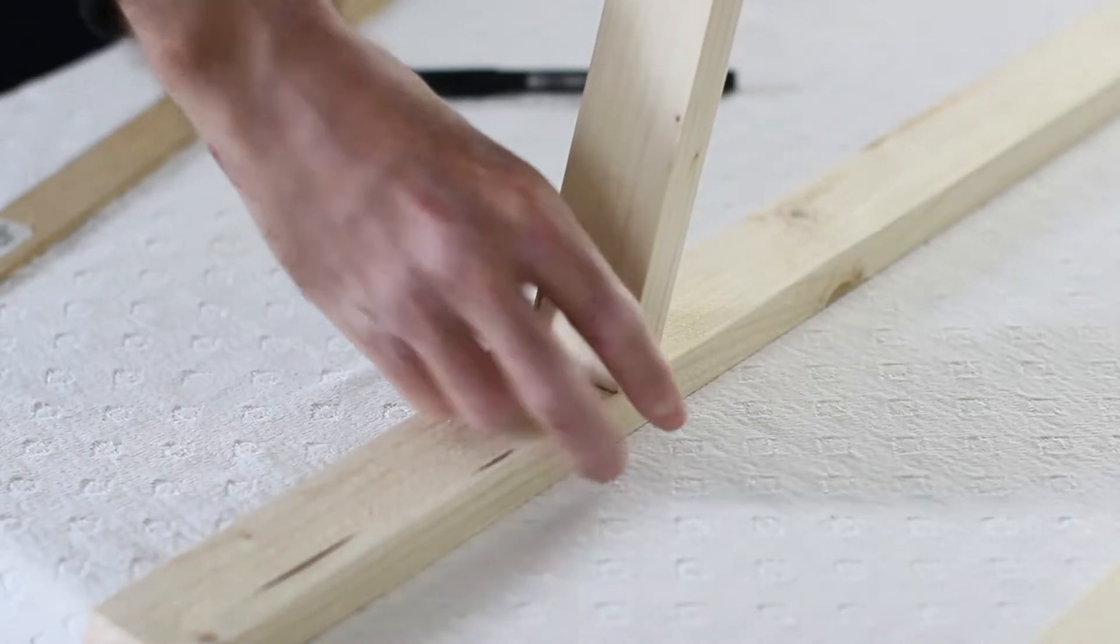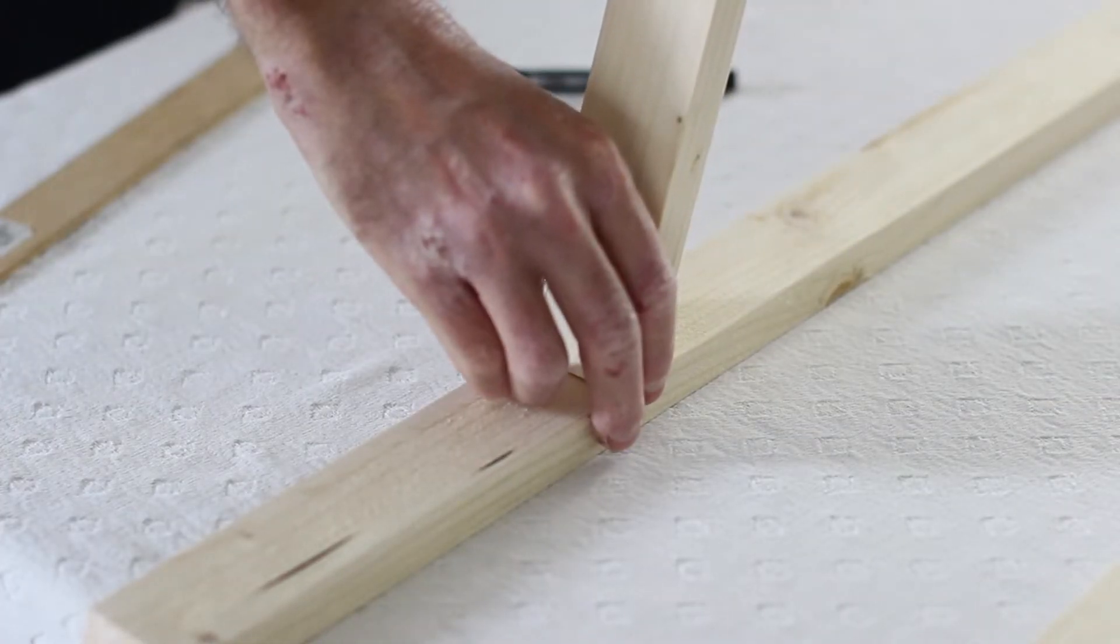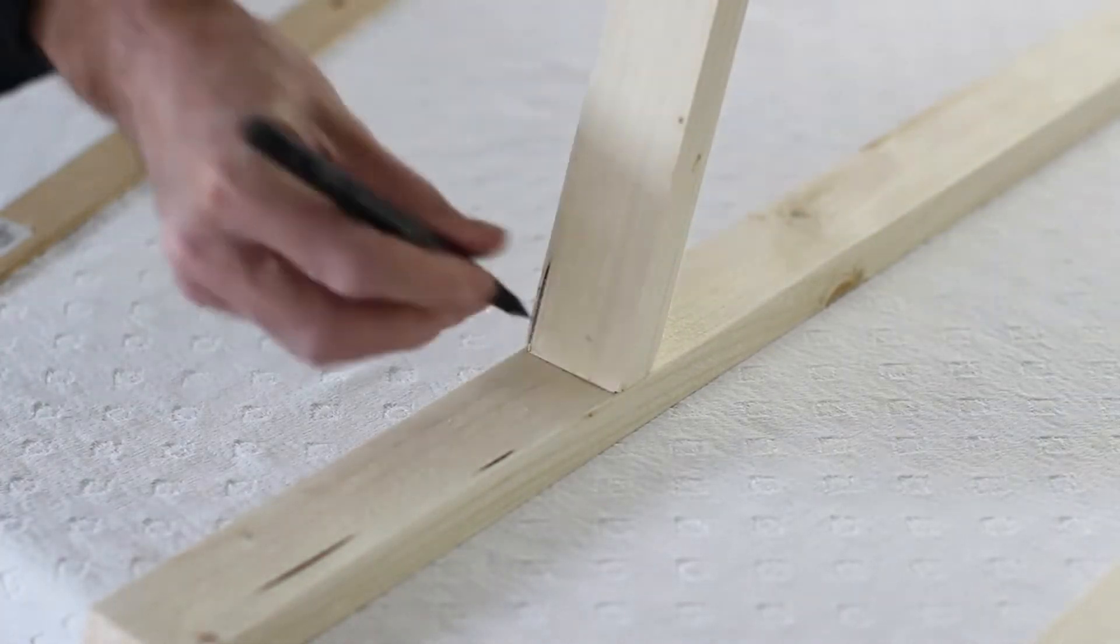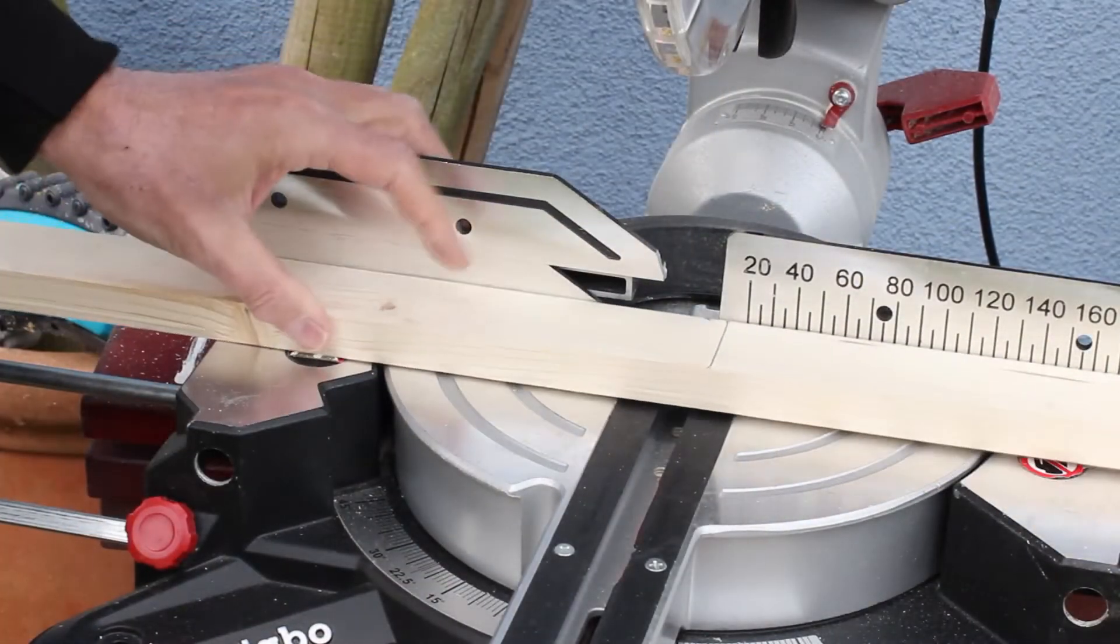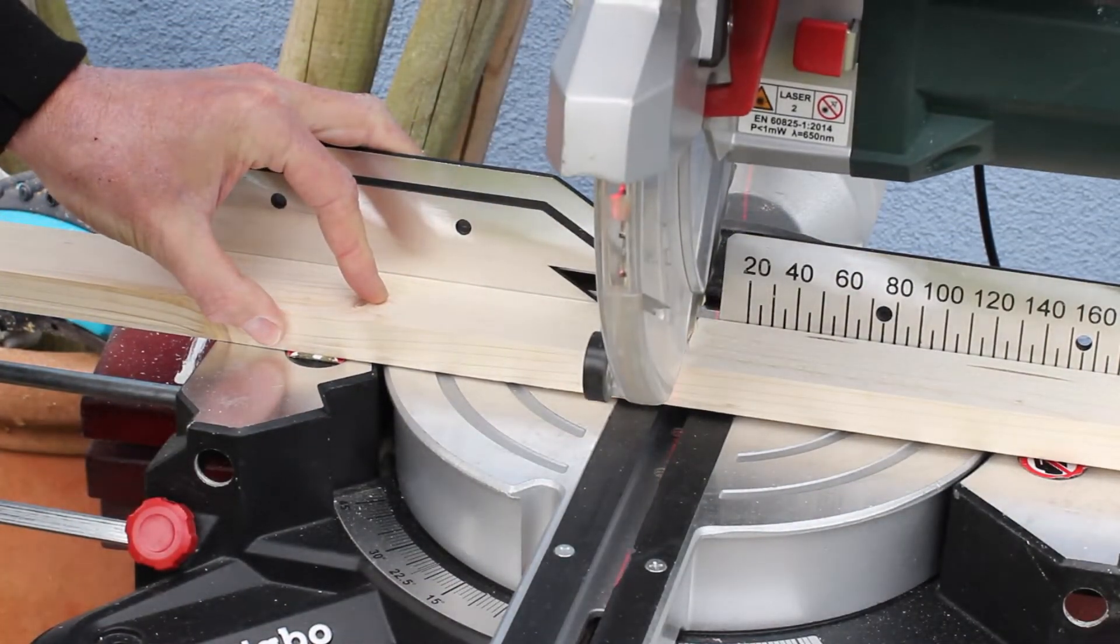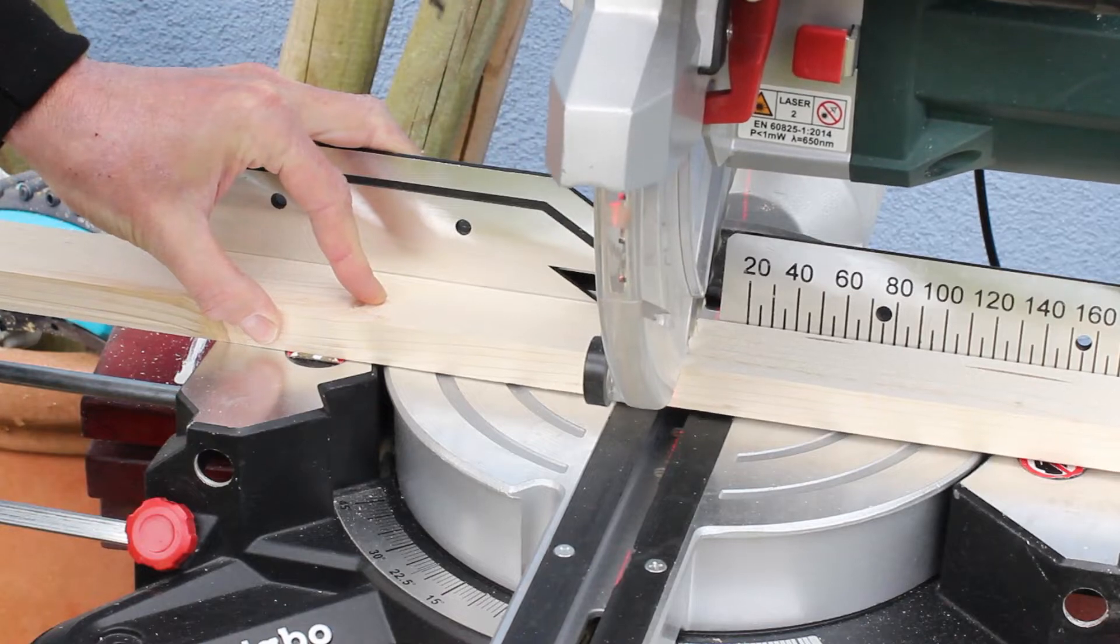And now we're going to cut the bottom of the triangle. The bottom edges of the upper two sides of the triangle have been cut at 22.5 degree angle as well and that makes sure that it sits really nicely on top of the base piece of wood.